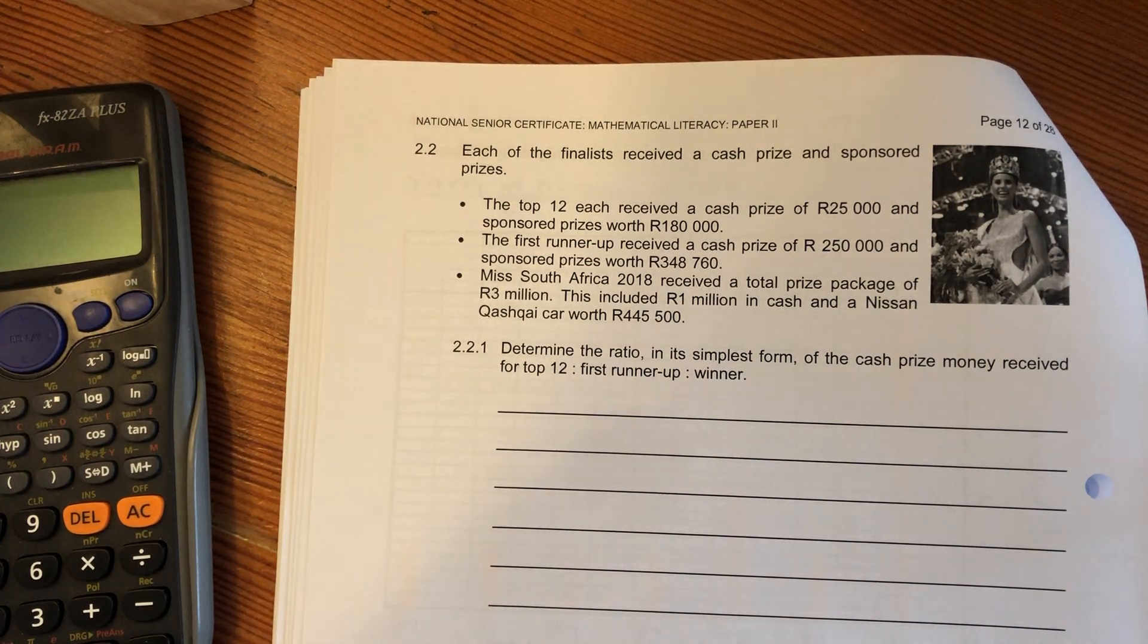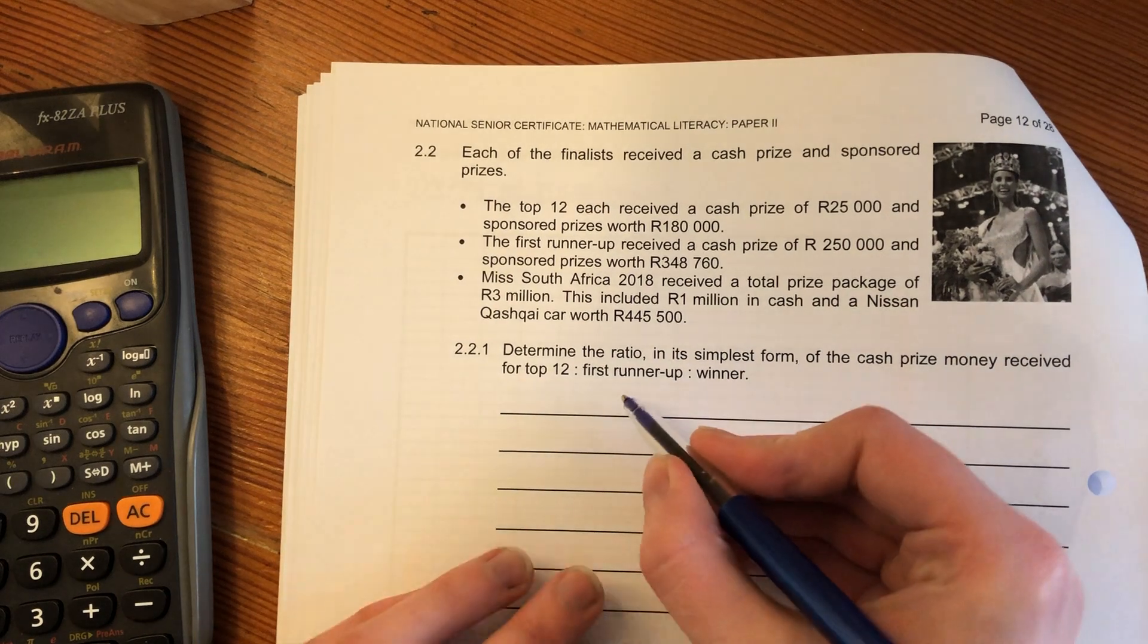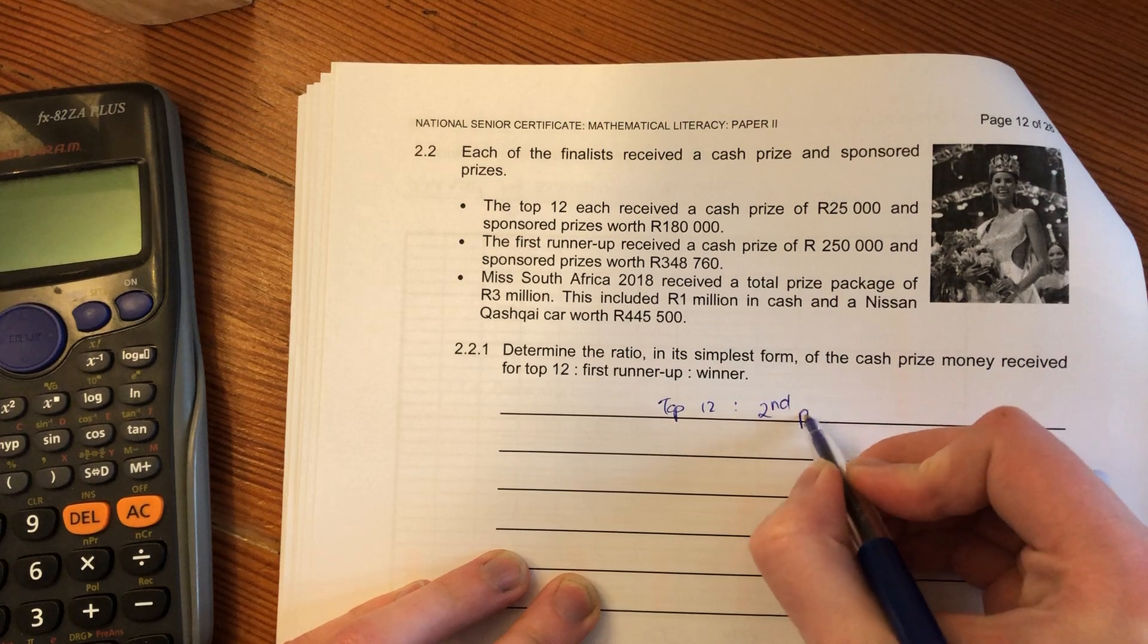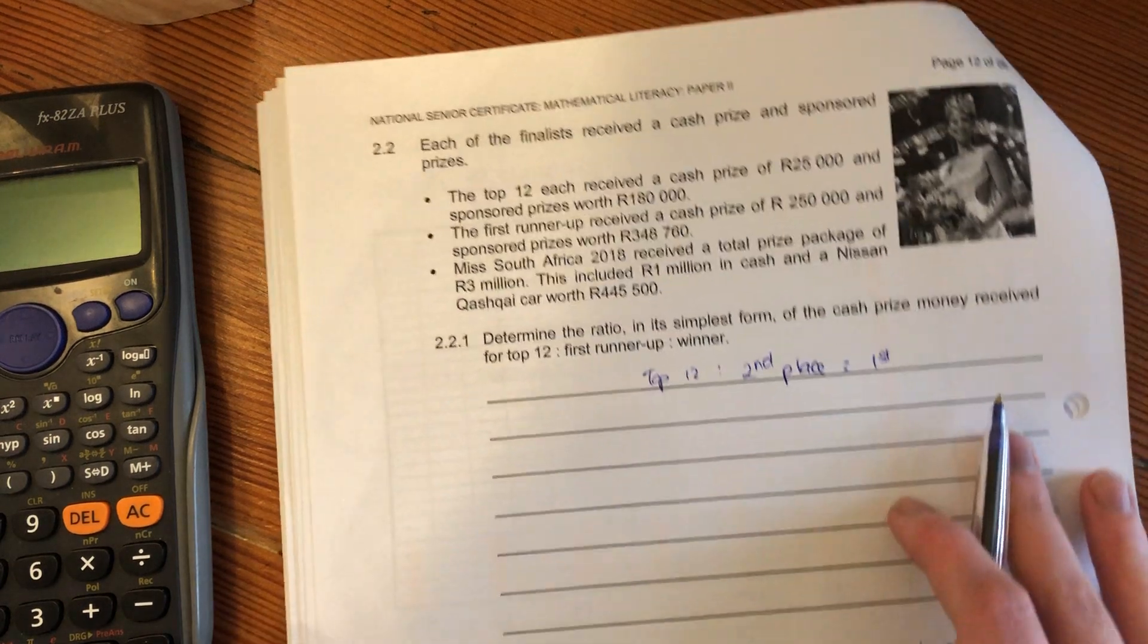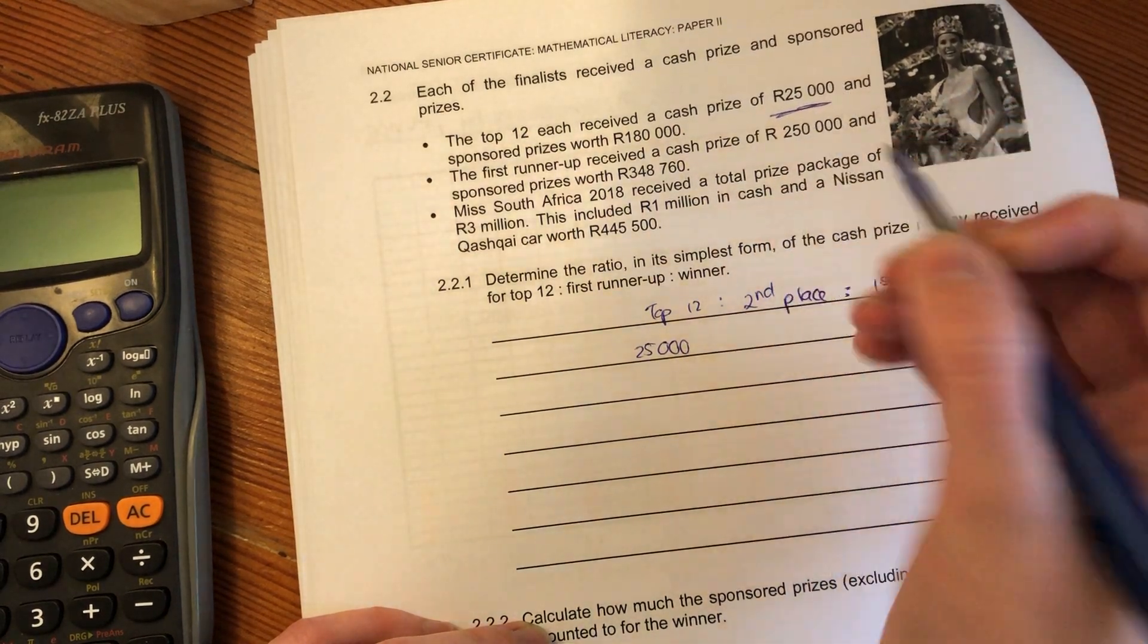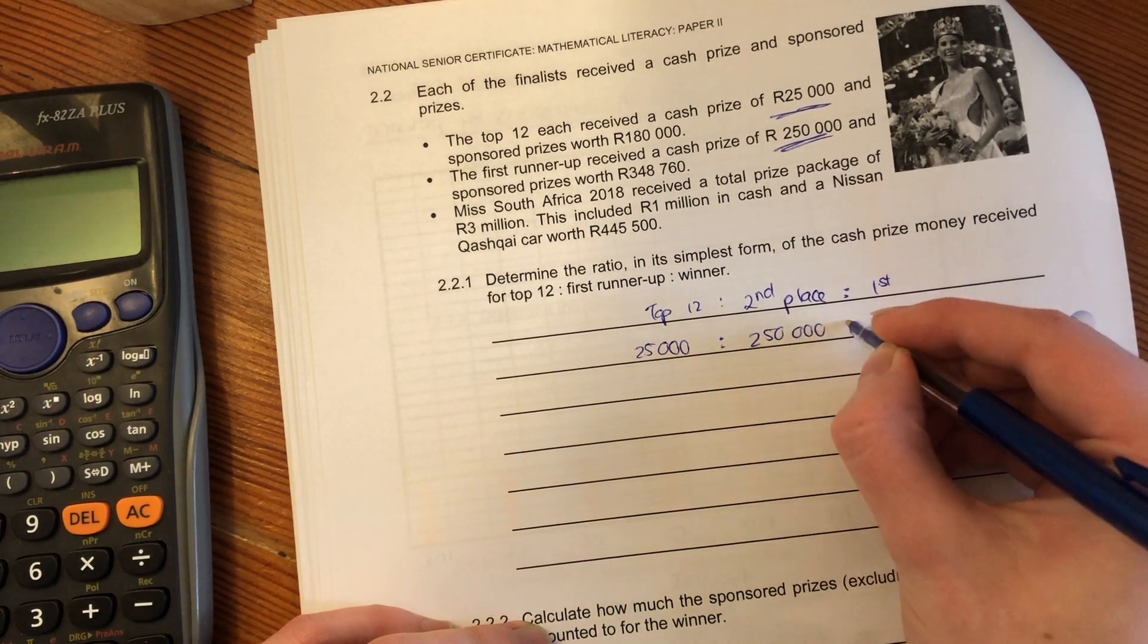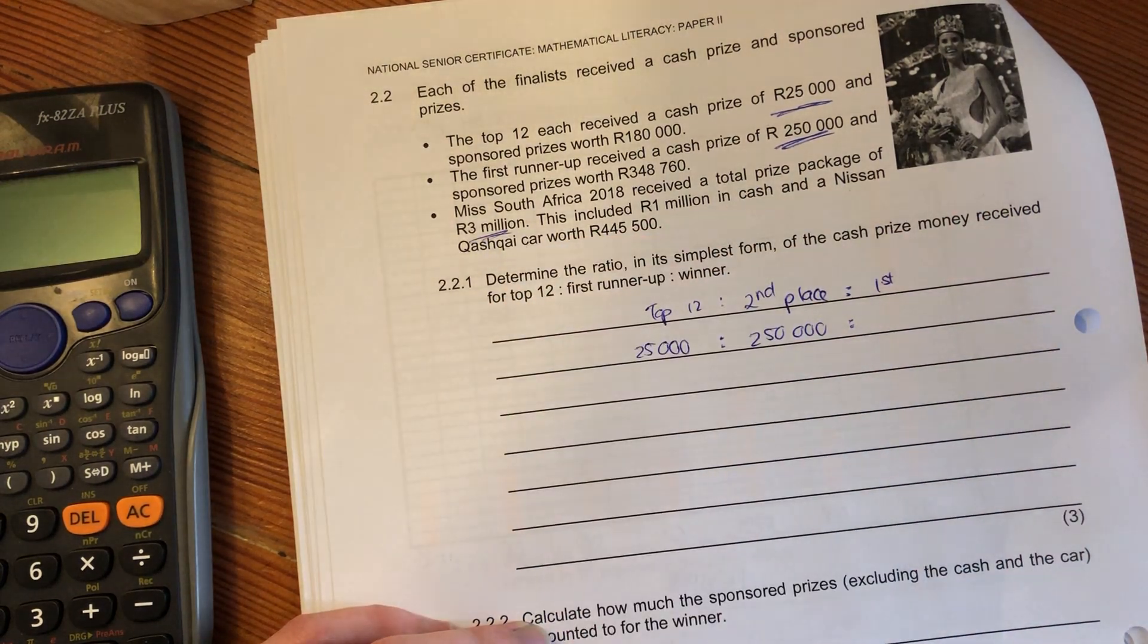The question says determine the ratio in its simplest form of the cash prize money received for the top 12 to the first runner-up to the winner. I'm going to write this out. Each of the top 12 got R25,000, that's over here. The second place guys got that much, and the first place got three million.